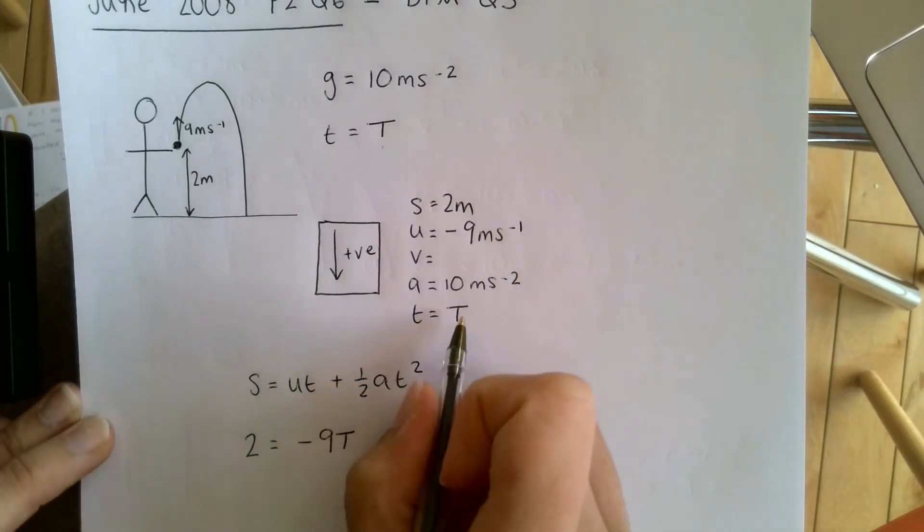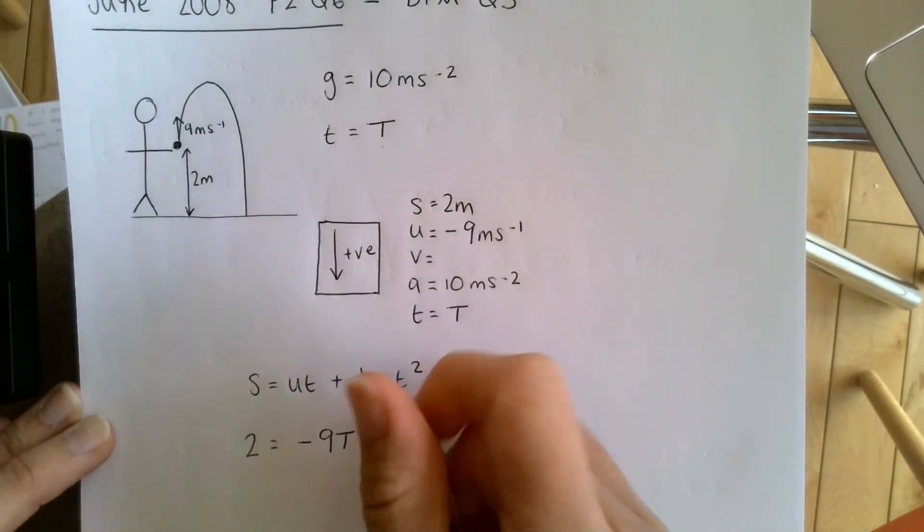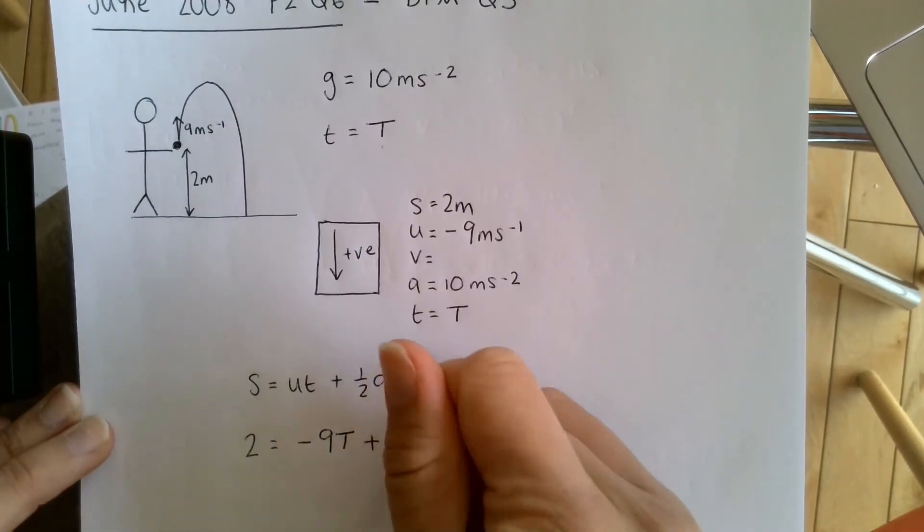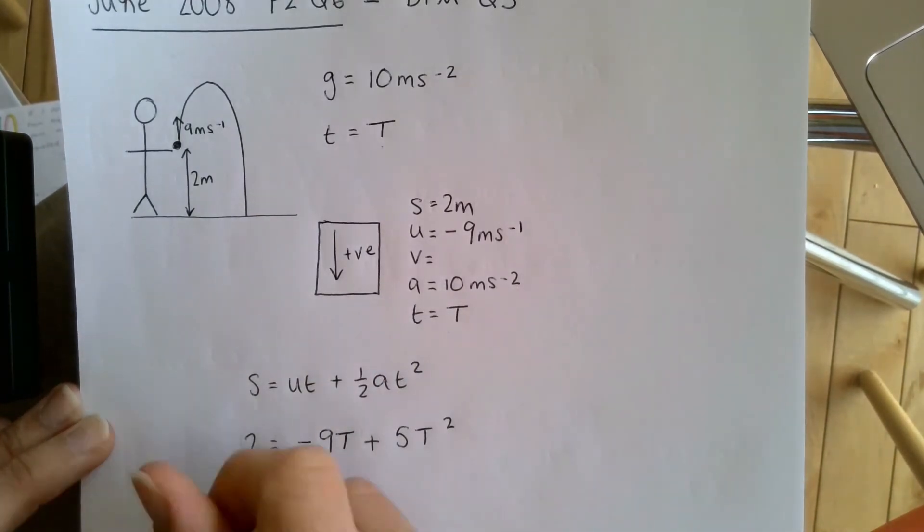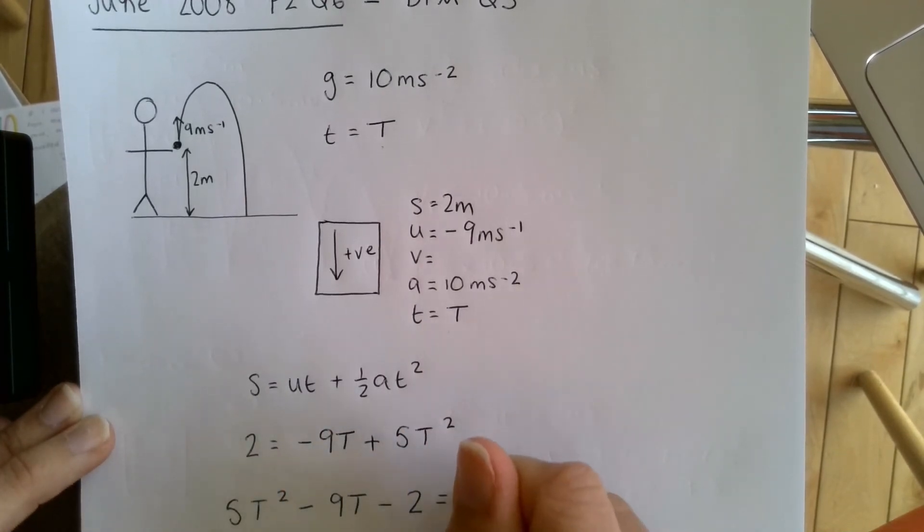Plus a half AT, so plus five because half of 10, T squared. I could rearrange that. I got five T squared minus nine T minus two is equal to zero.